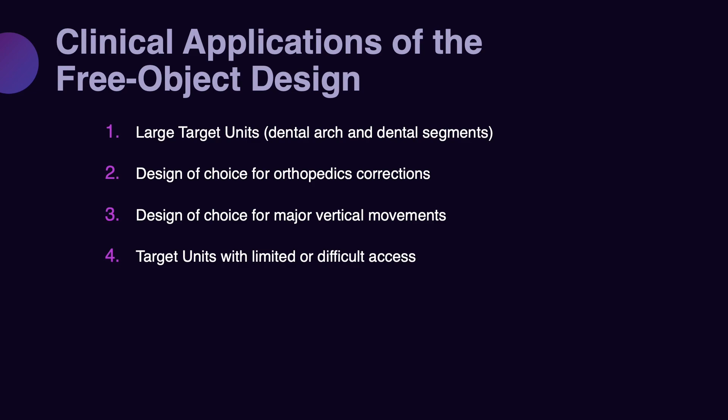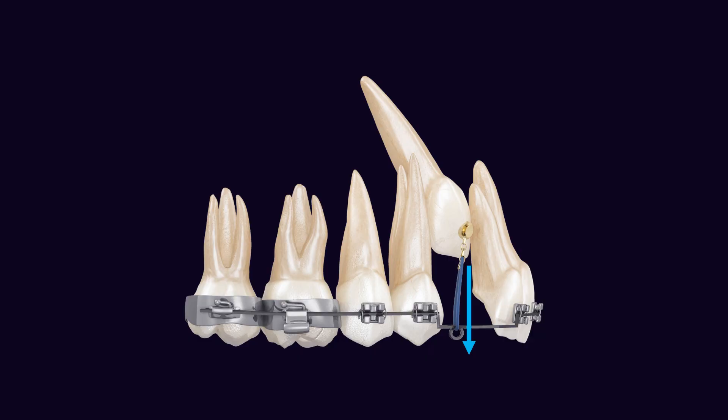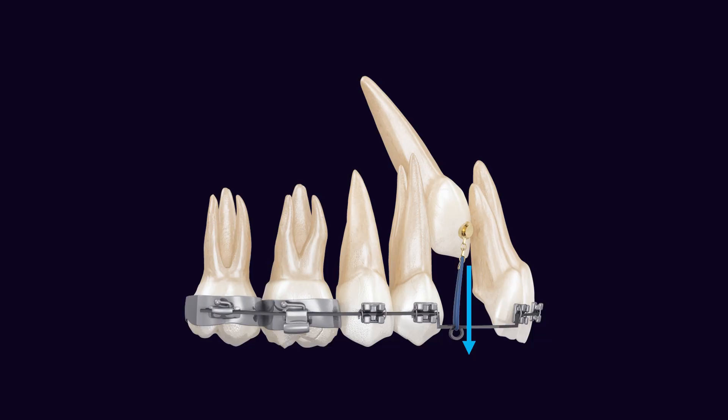However, there are situations when free object design is the only option we have, especially for places where anatomically accessing the target is not easy. For example, with an impacted canine, you can just put an attachment on it and apply a force. In these situations, you do not have much of an option but a single force applied to the canine. You can change the direction of the force, but you can only apply a free object design. You just apply a force and pull the canine in the direction you want — vertically or horizontally — and then change to more controlled mechanics, such as semi-restricted design.